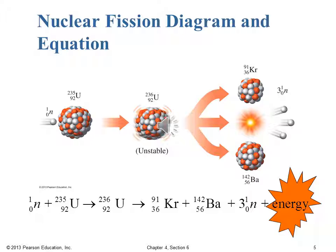That neutron hits the U-235 nucleus, makes that unstable U-236 nucleus, which then decays into krypton-91, barium-142, and three neutrons, plus lots of energy. Those three neutrons are now free to find three new U-235 nuclei and spread this chain reaction — either in a controlled way where boron control rods absorb those neutrons and slow down the process in a nuclear reactor, or to cause that uncontrolled chain reaction in the case of a nuclear weapon.